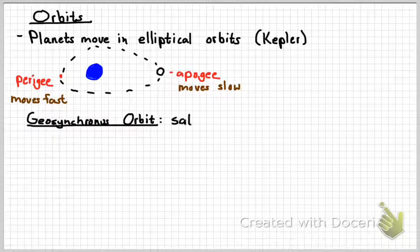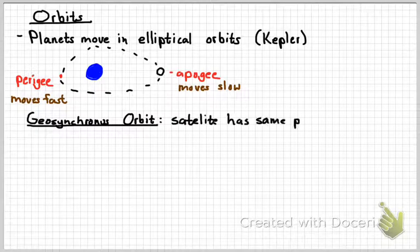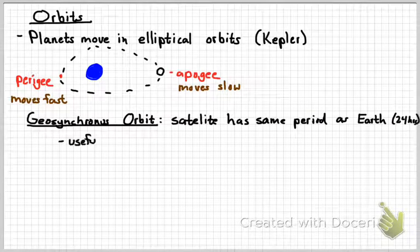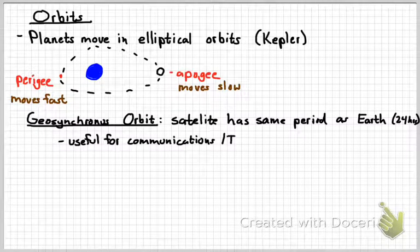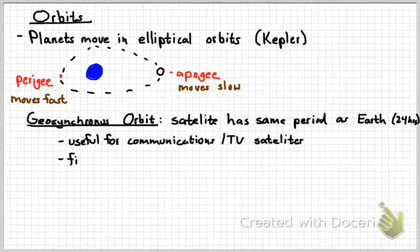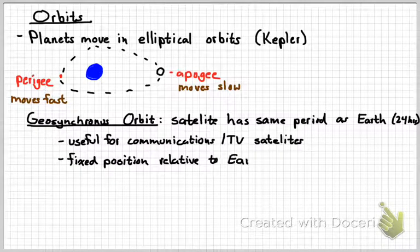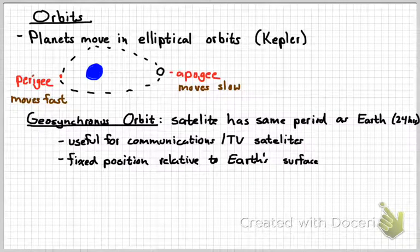A geosynchronous orbit, like what we use for TV satellites, means that the satellite has the same period as the Earth, which is 24 hours. It's useful for communications and TV satellites because we always want them to be at a fixed position relative to the Earth. So if I put a satellite dish on the roof of my house, it can always point at the same spot in the sky and not have to move around.